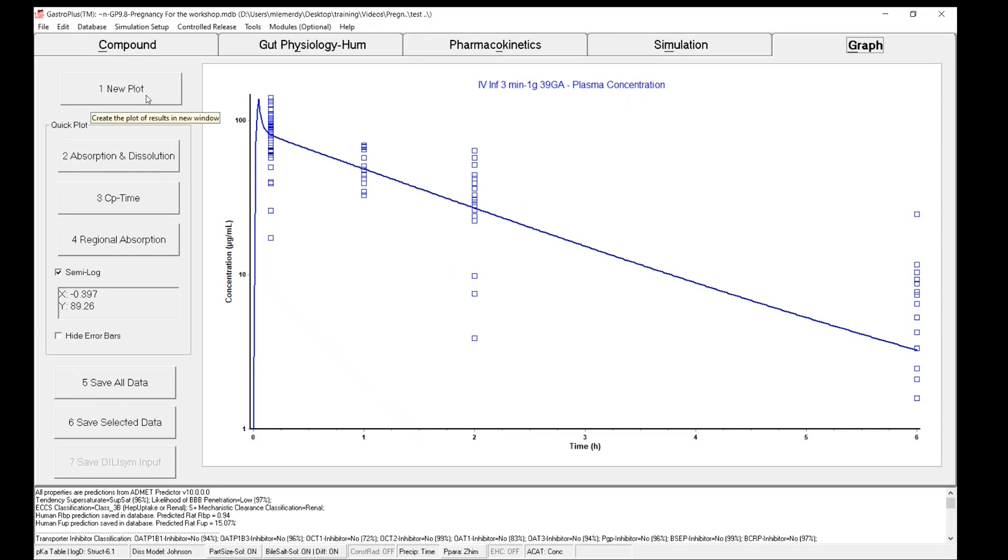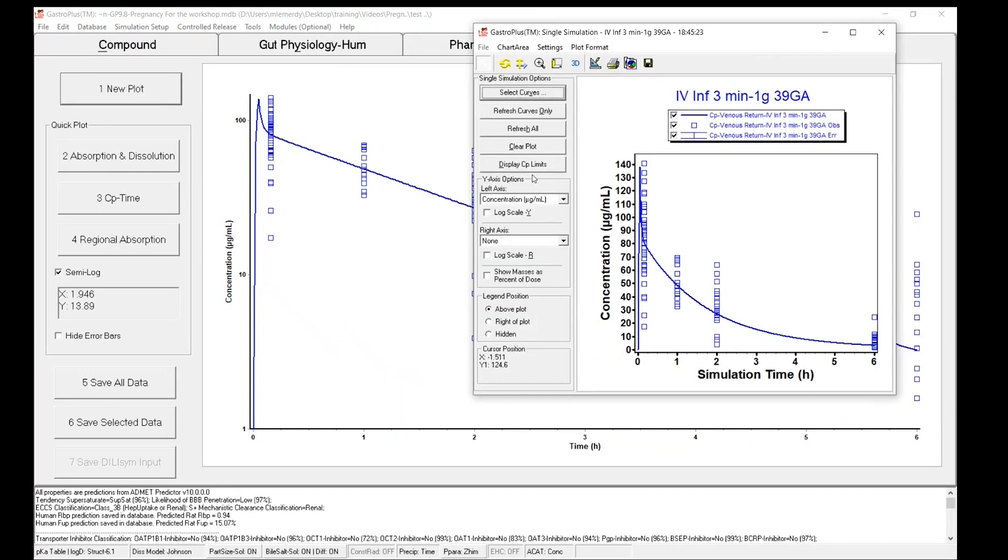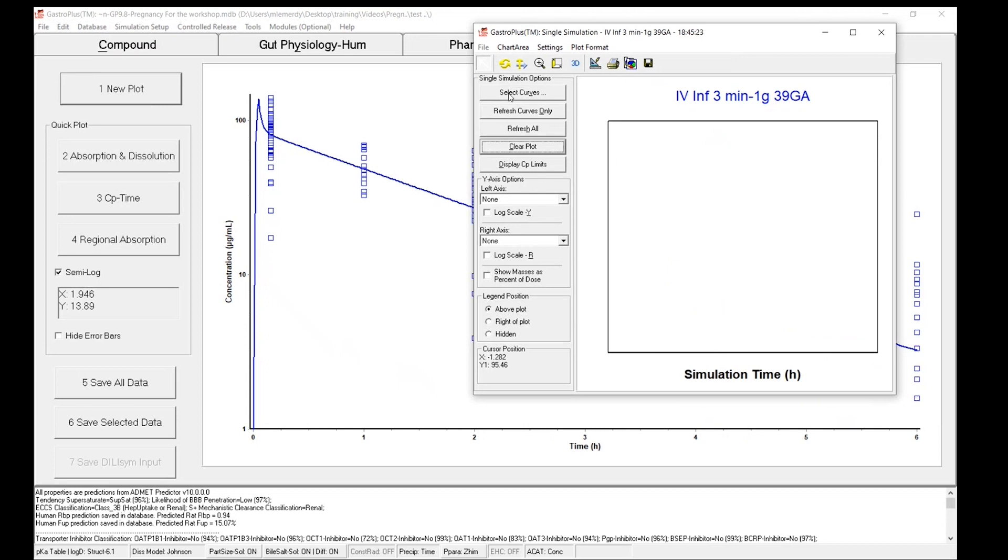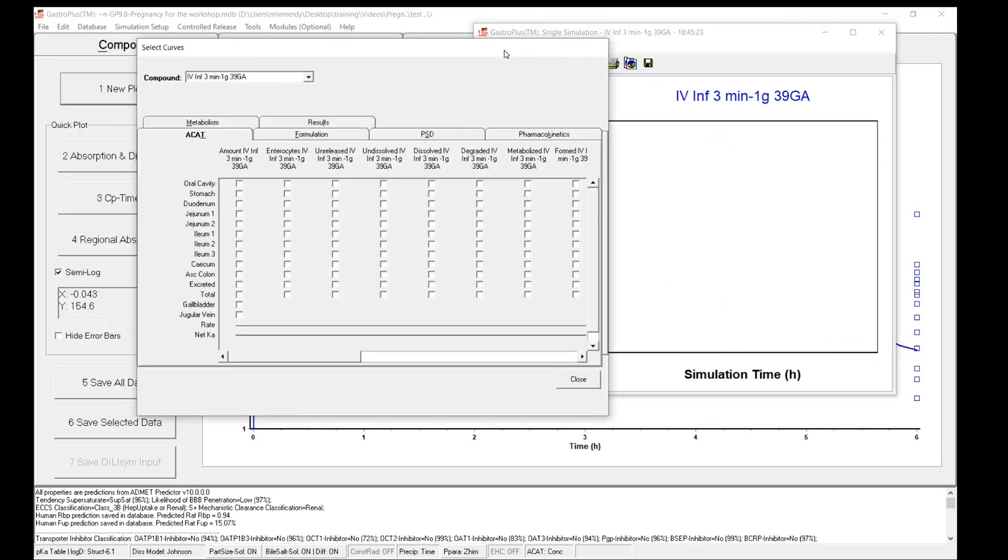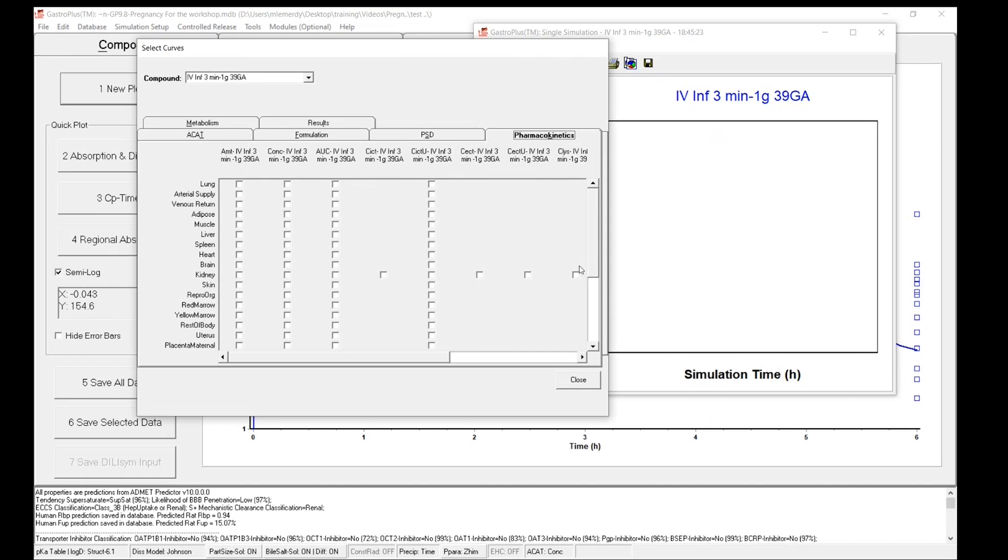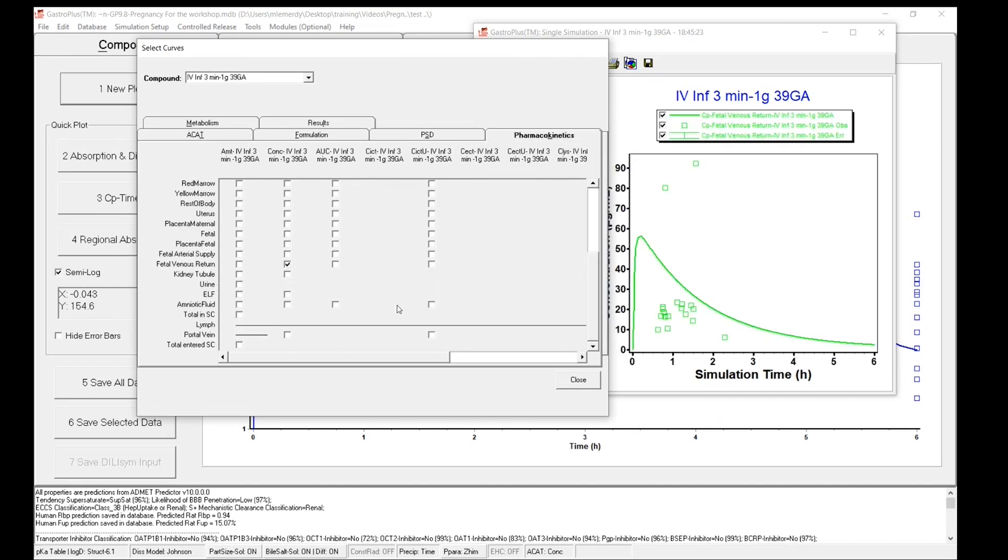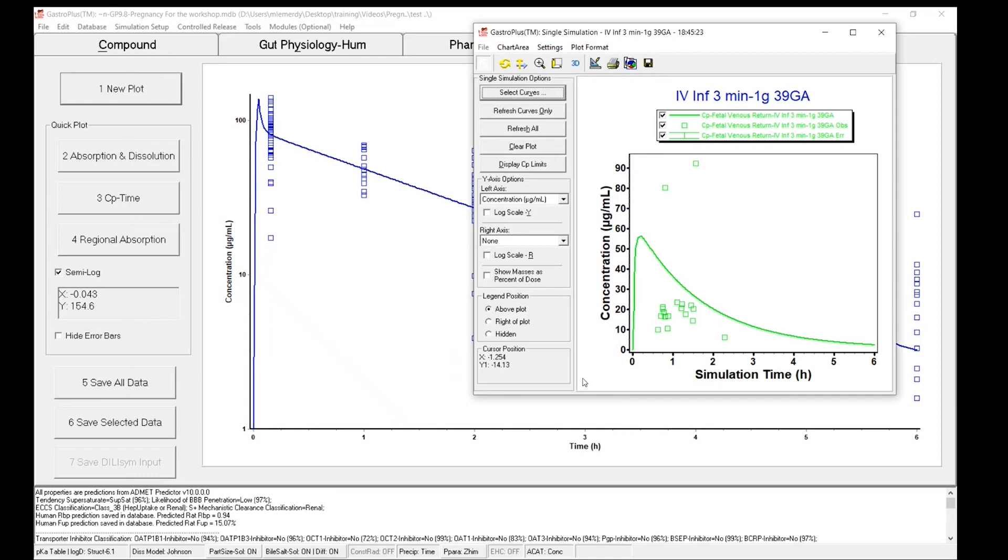Now let's have a look at the fetus. So I will clear this plot to have a clean picture. Select curves. And on the pharmacokinetic tab, I can scroll down and find the fetal venous return concentrations right there. You can see that the prediction overall is in the right range. But it seems the dynamic is not correct. The absorption seems to be too fast.